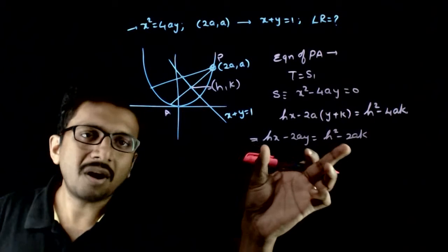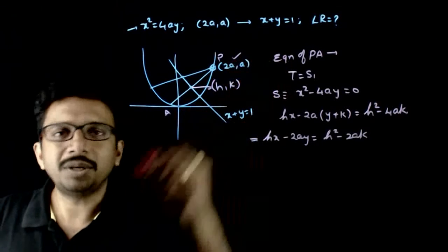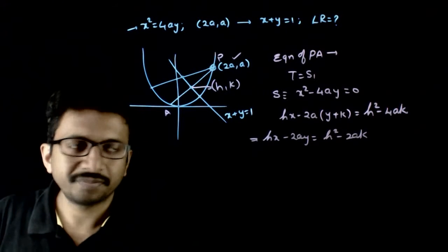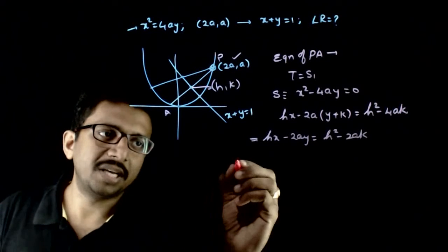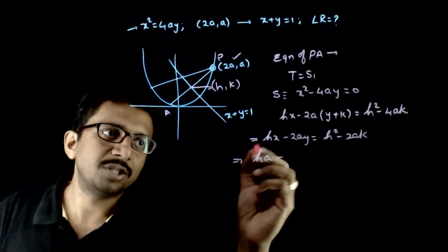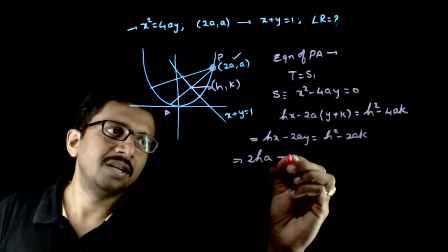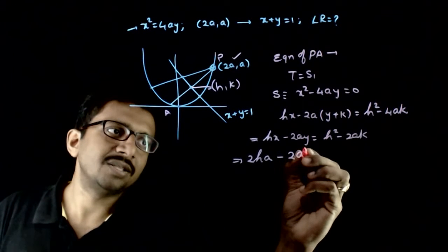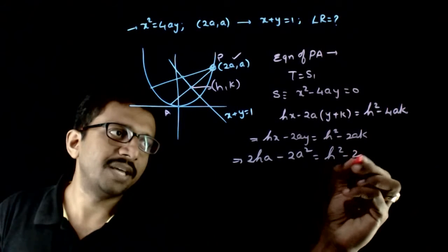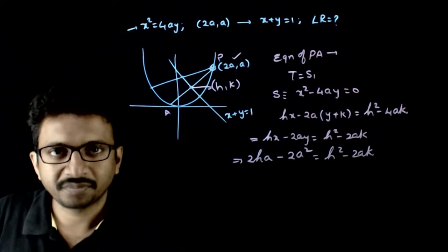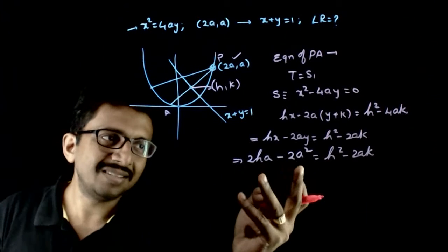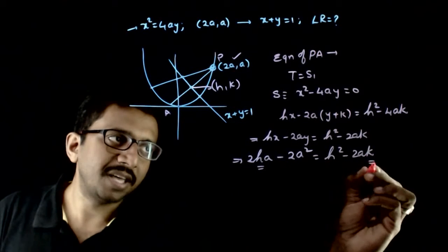Now, this chord has to pass through the point (2a, a). That is the condition. So if this chord passes through (2a, a), substituting x = 2a gives us: 2ha - 2a² = h² - 2ak. This is the condition which (h, k) has to satisfy.